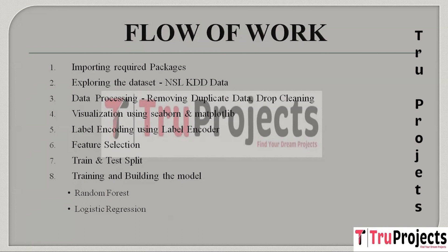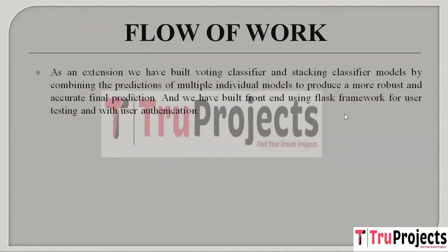The next algorithm is Logistic Regression, a simple yet powerful classification algorithm used to model the probability of a binary outcome, distinguishing between normal network traffic and DDoS attacks. The next model is KNN (K-Nearest Neighbors), a non-parametric classification algorithm that classifies data points based on their proximity, useful for identifying patterns in network traffic and categorizing them as normal or indicative of a DDoS attack.